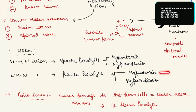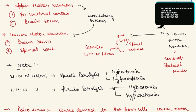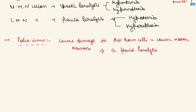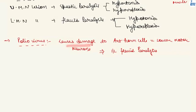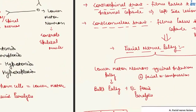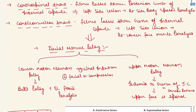One clinical case: when the lower motor neuron is directly damaged, flaccid paralysis will occur on the ipsilateral side. A clinical example is whenever a person is infected with poliovirus — poliovirus causes damage to the anterior horn cells, which are the lower motor neurons — and causes ipsilateral flaccid paralysis.